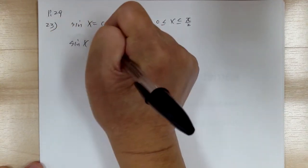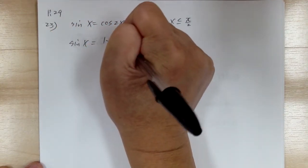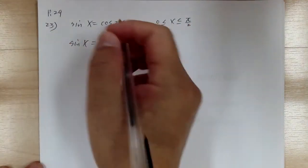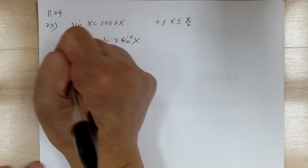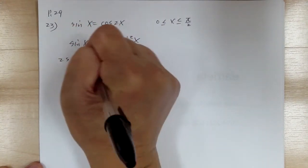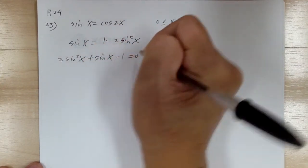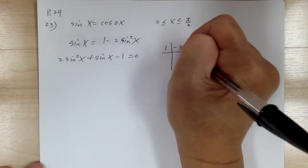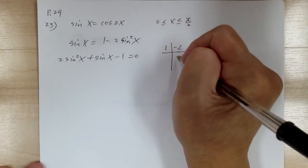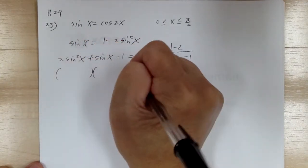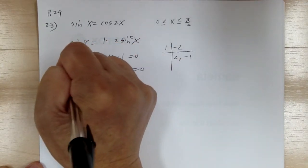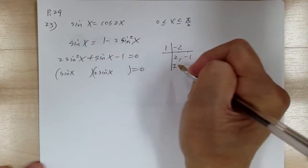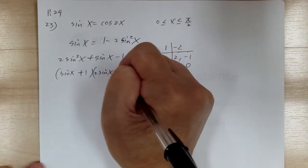So sine x equals 1 minus 2 sine squared x. We move everything to one side to make it equal to 0 for factoring. You get 2 sine squared x plus sine x minus 1 equals 0. Using the master product method, we get 2 and negative 1, giving inside plus 1 and outside minus 1.